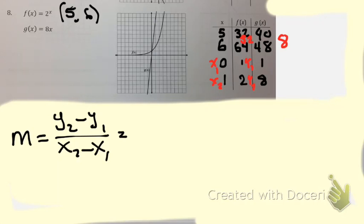So what's y2? 2 minus, what's y1? What's x2? What's x1? So 2 minus 1 is what? And 1 minus 0 is, so the slope there is just 1. And that was for f of x.